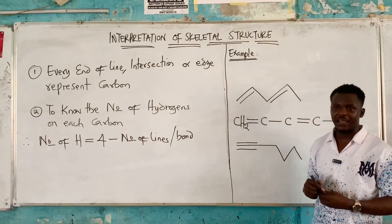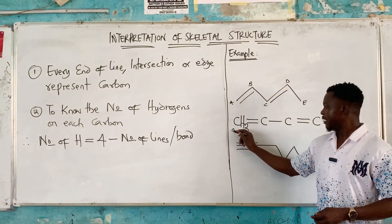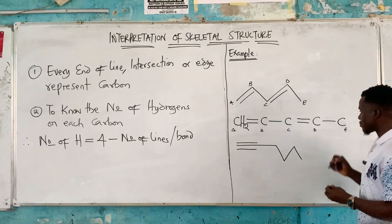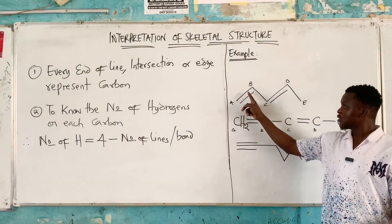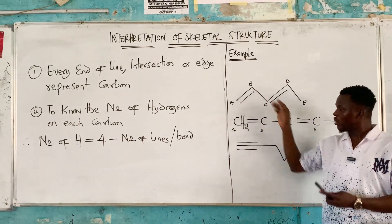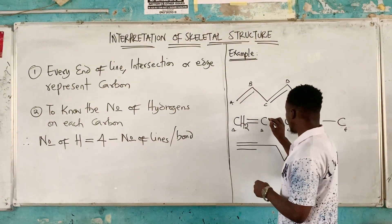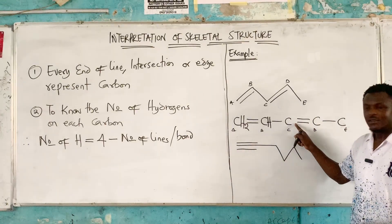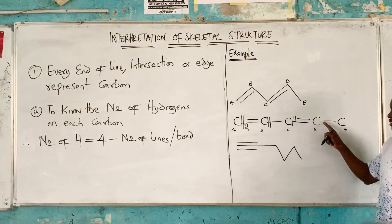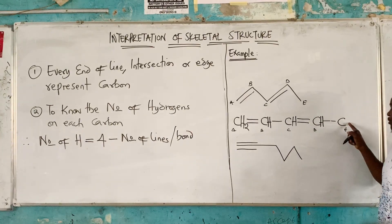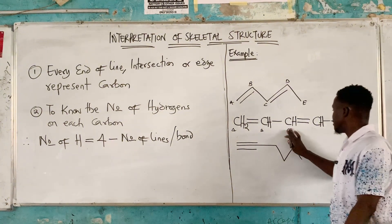Let's call these carbons A, B, C, D, and E. Carbon B has three lines attached: two lines here and one line here — so four minus three is one hydrogen, here becomes CH. Carbon C also has three lines — one, two, three — same calculation, one hydrogen. Carbon E has one line, so four minus one gives three hydrogens — CH3.